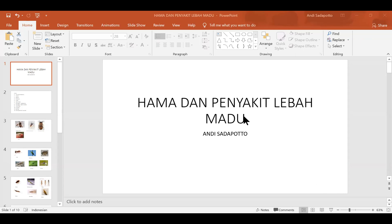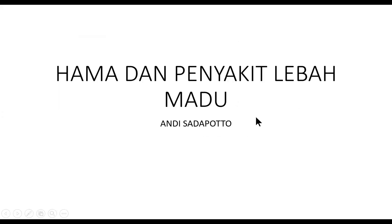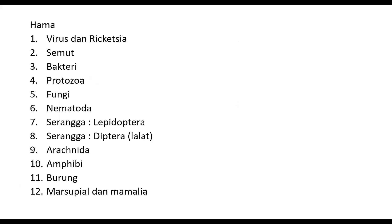Baik, pada minggu sebelumnya sudah dijelaskan mengenai biologi, ekologi, kemudian sistematika, taksonomi, kemudian manajemen koloni. Sekarang kita bahas mengenai hama dan penyakit lebah. Jenis lebah yang dibahas meliputi Apis mellifera, Apis cerana, kemudian juga Apis dorsata.